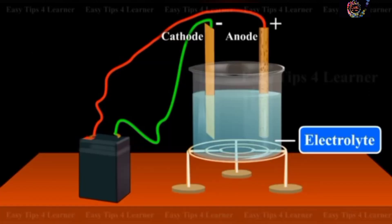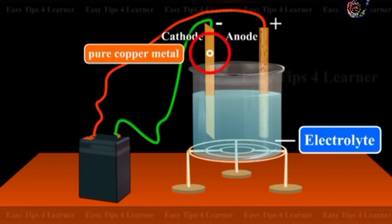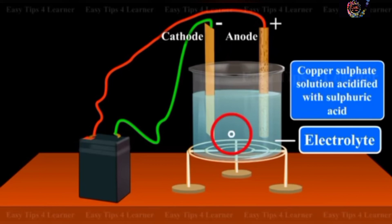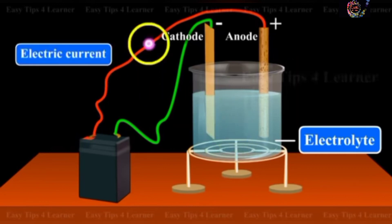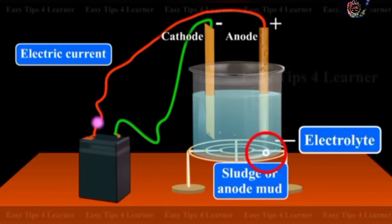For electrolytic refining of copper, a block of impure copper acts as the anode, and a thin plate of pure copper acts as the cathode. Copper sulfate solution acidified with sulfuric acid is taken as the electrolyte. When electric current is passed through the electrolytic solution, pure copper gets deposited on the cathode. Impurities settle near the anode in the form of sludge called anode mud.